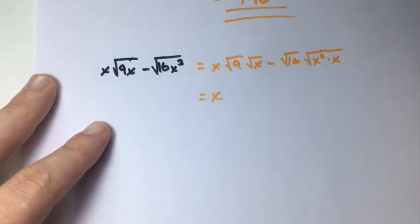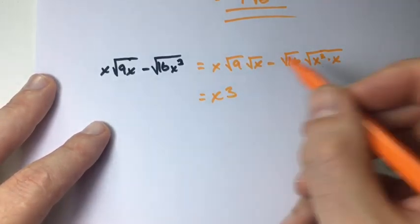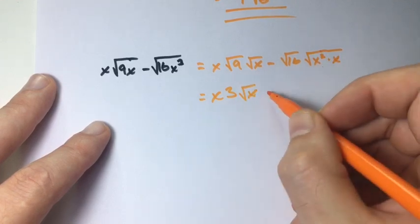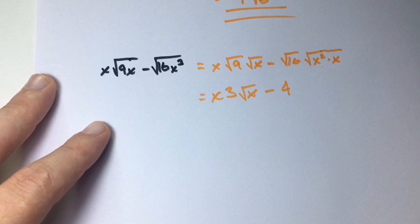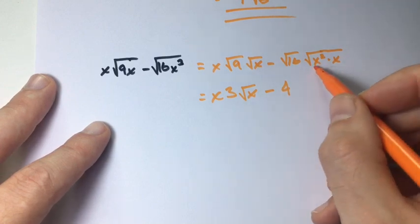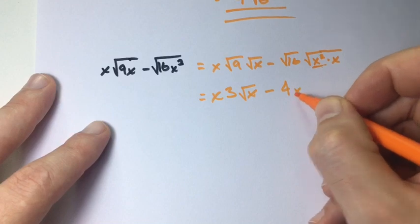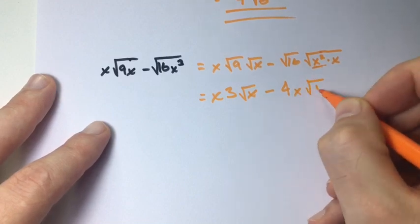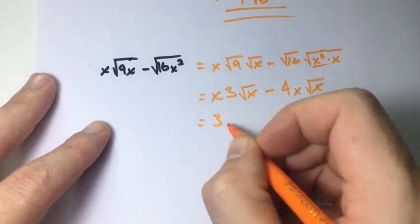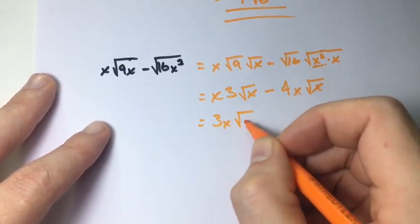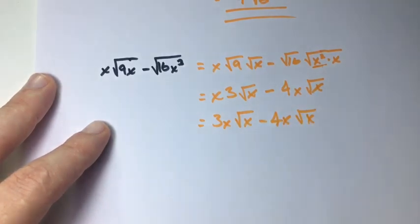Solving this now: we know the square root of 9 is 3, times the square root of x, minus the square root of 16 which equals 4. Taking x squared out of the root gives us x times the square root of x. I don't like the x in front of the 3, so I'll rewrite it as 3x times the square root of x, minus 4x times the square root of x.